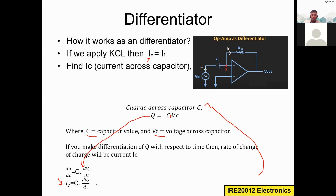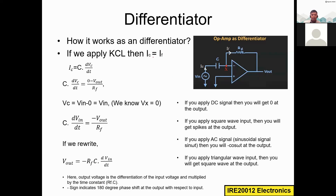This is the same equation seen in the integrator analysis. Now applying ic = if: we already know the ic value. For if, the potential difference gives Vx minus Vout divided by Rf. Since Vx equals zero, if = (0 − Vout) / Rf = −Vout / Rf.